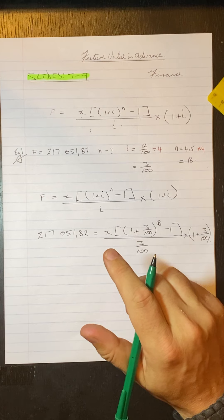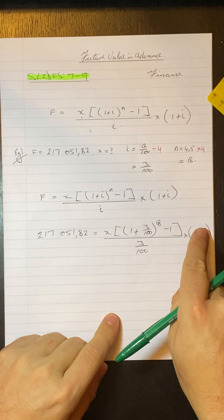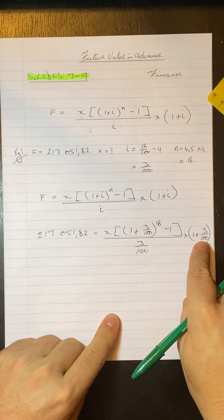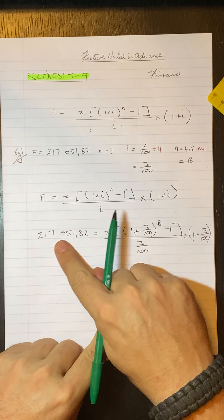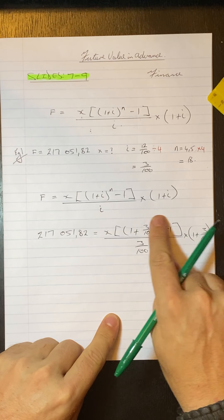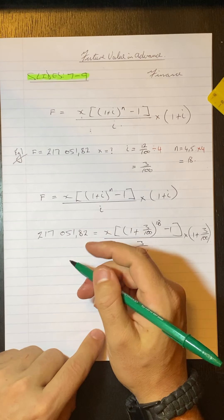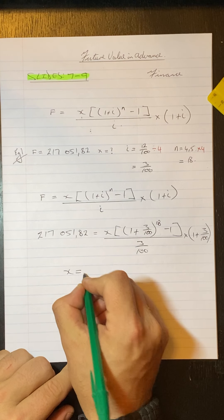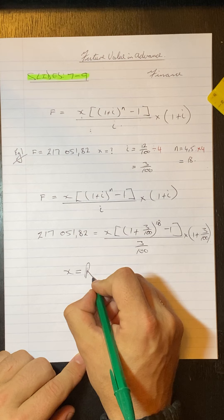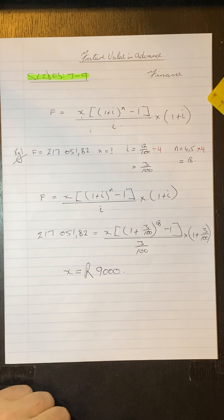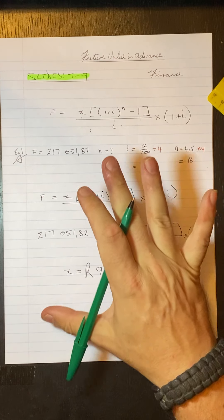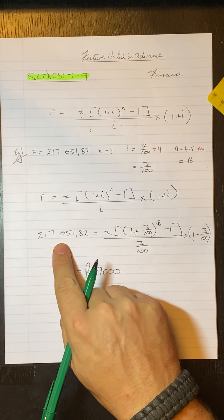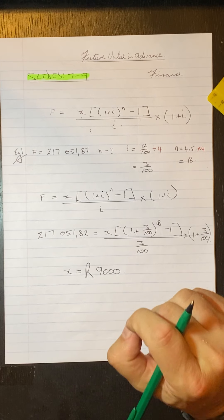I'm going to work out this section on the calculator, get an answer, then divide. Working that out on the calculator, we get X equals 9,000. So this person paid 9,000 rand every quarter to get that bond value, starting payments immediately.